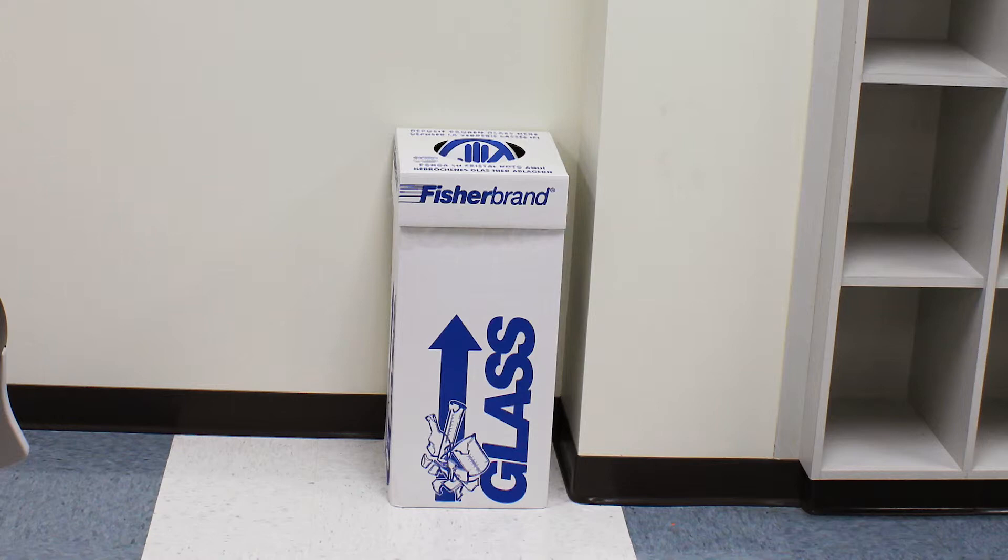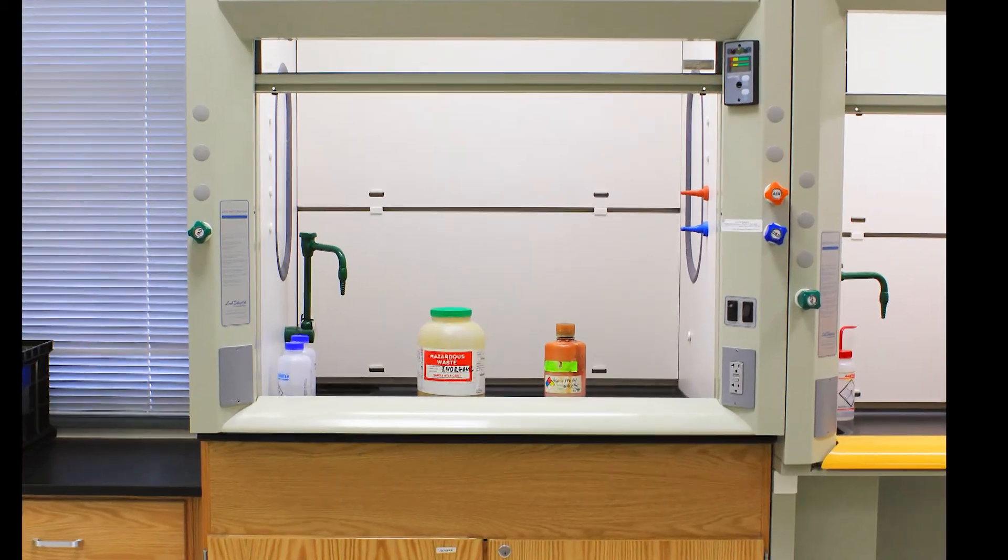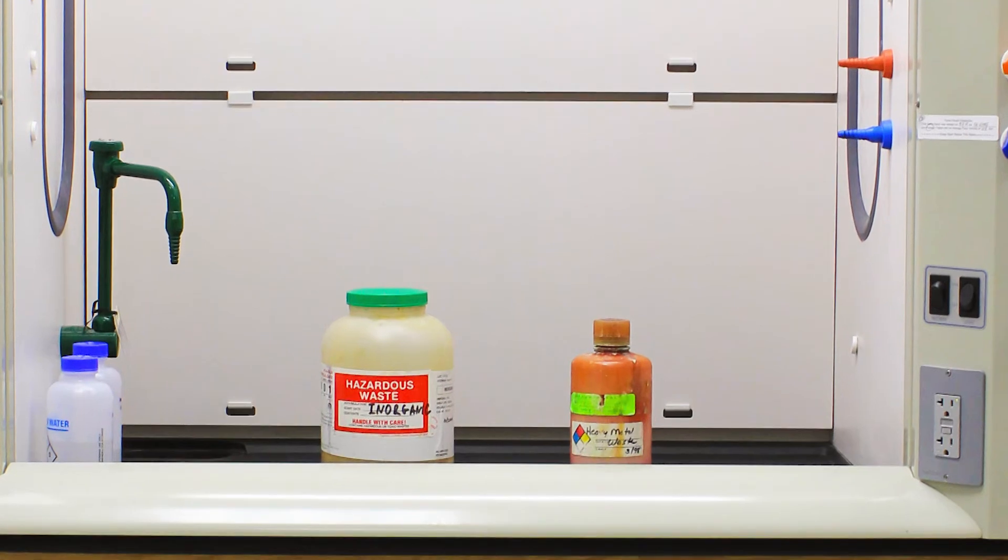There are several types of waste containers that you will be required to know about. Heavy metals such as silver need to be placed in a heavy metal waste container. Note the green sticker indicating the presence of a heavy metal. This same sticker will be on the reagent bottle. Other metal ion waste will go into the inorganic waste container.